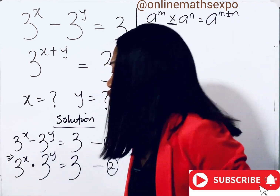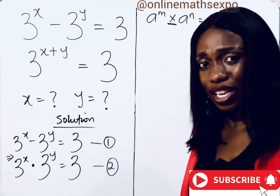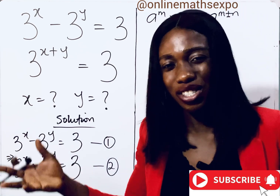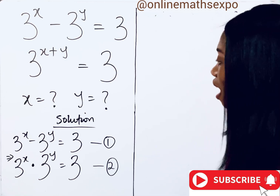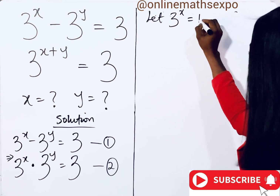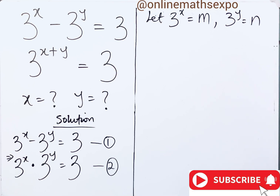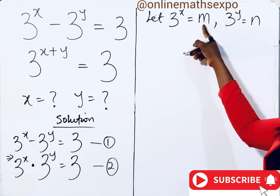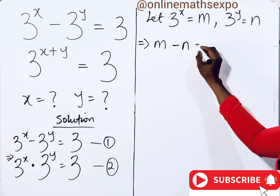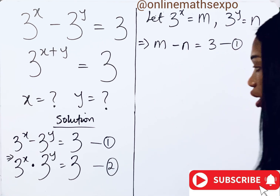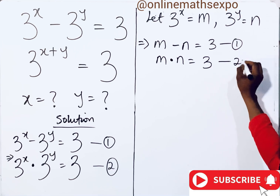You observe that 3 to the power of x appears in both equations, and 3 to the power of y is also in both. So you can choose to use another variable to replace them for easy solving. Let's let 3 to the power of x be variable m, and let 3 to the power of y be variable n. Instead of writing 3^x, replace it with m, so we have m minus n is equal to 3 — this is equation 1. And m multiplied by n is equal to 3 — this is equation 2.